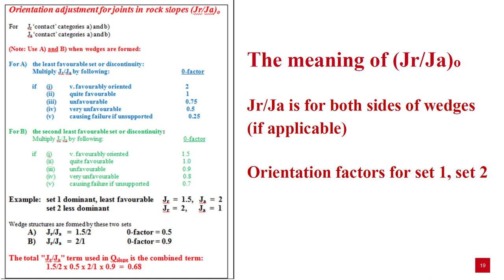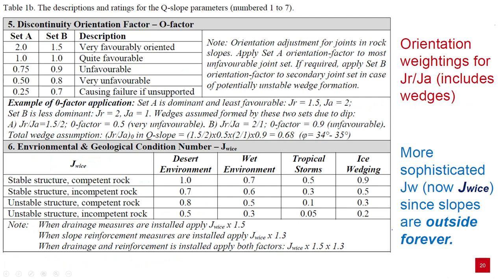Orientation factors are set for both joint sets where applicable — for set 1, the dominant joint set, and for set 2, the secondary set. The discontinuity orientation factor, or O-factor, is described in the table and is based on how favourable or unfavourable that geological structure is. Apply the orientation factor to the most unfavourable joint set, and where required apply a second one to the secondary joint set that could potentially form a wedge. The environmental and geological condition number, J-wise, replaces JW. It is more sophisticated since slopes are outside and exposed to the elements permanently — it considers whether it's a desert, wet environment, tropical storms, or ice wedging, and also whether the general structure is stable or unstable and the competency of the rock.